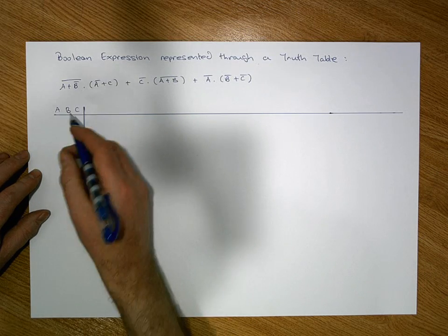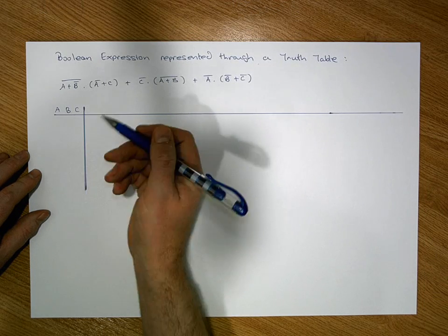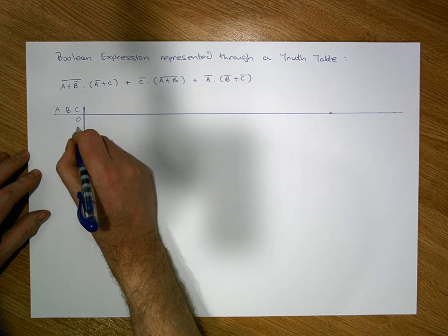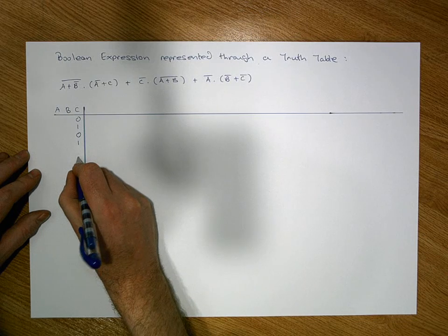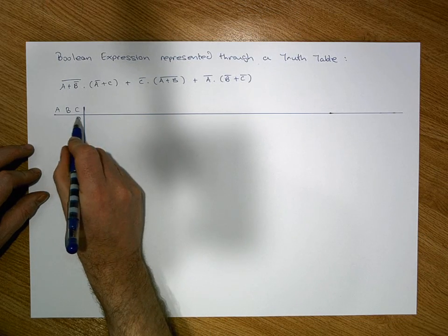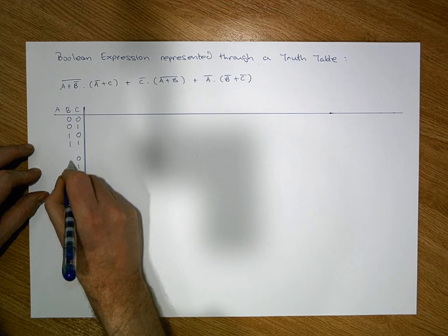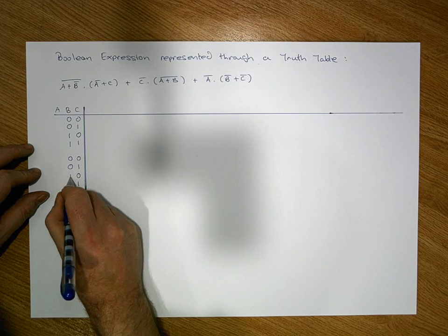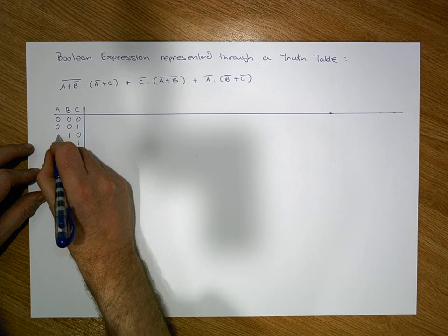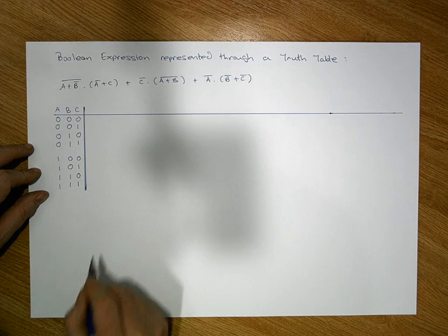A quick way to fill in the input columns: the input closest to the bar alternates off/on — 0, 1, 0, 1, 0, 1, 0, 1. The second input doubles the sequence: two zeros followed by two ones, two zeros followed by two ones. The third input doubles that again: four zeros followed by four ones. Now that we've defined the inputs, we'll process the expression left to right, term by term.